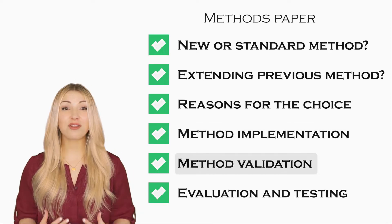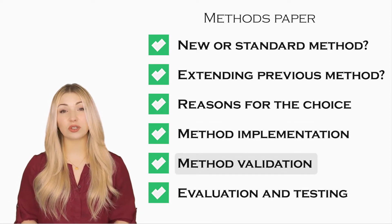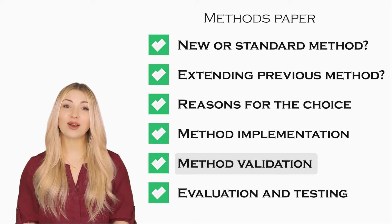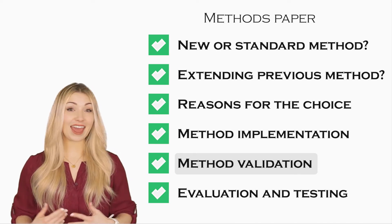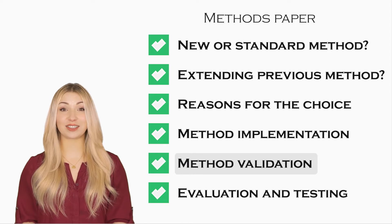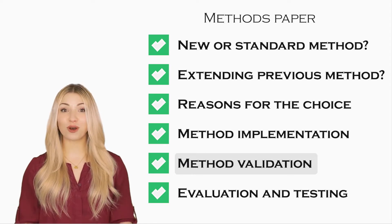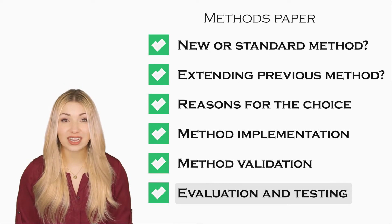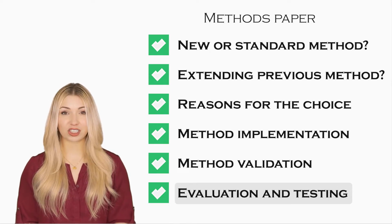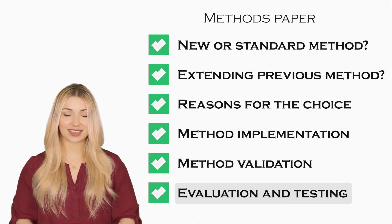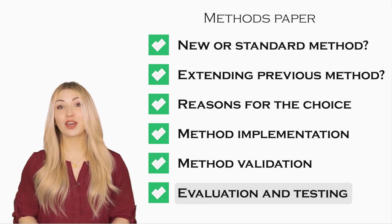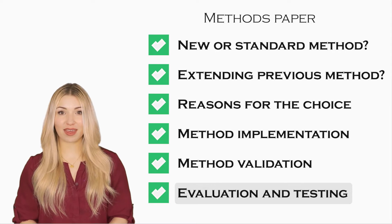Then you can talk about how the methods were validated to confirm that they are suitable for your research. You can also include information about any pilot or preliminary studies you conducted before the full study. Then you can explain how you propose to test and evaluate the methods to prove that they are better than the existing methods. Here, you can talk about metrics and statistical tests you will be using to evaluate your method.